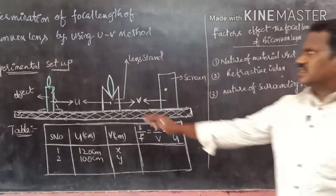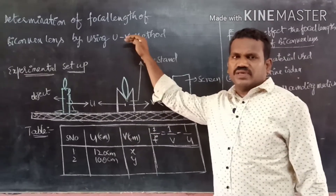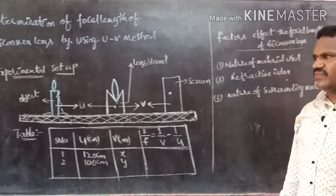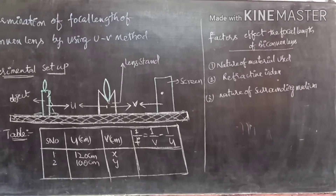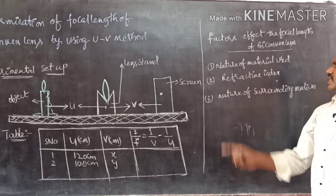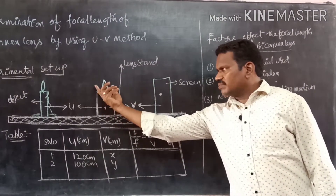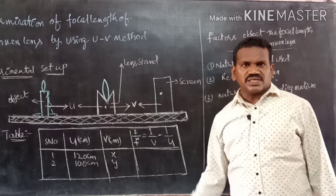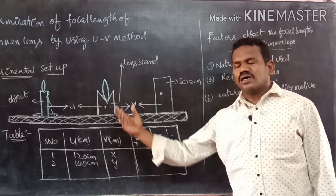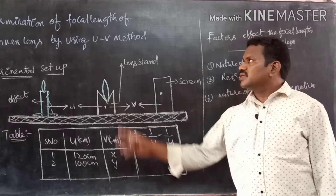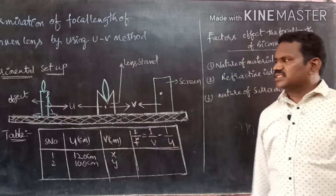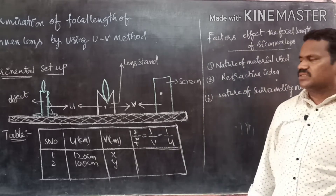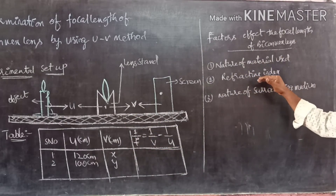We have determined the focal length of a biconvex lens using the UV method. Now let us discuss what factors affect the focal length. The focal length depends on the nature of the material from which the lens is made — for example, ruby, sapphire, crown glass, flint glass, or other materials. As the material changes, the focal length also changes. Note that the focal length of a given lens is constant and does not change with object distance.